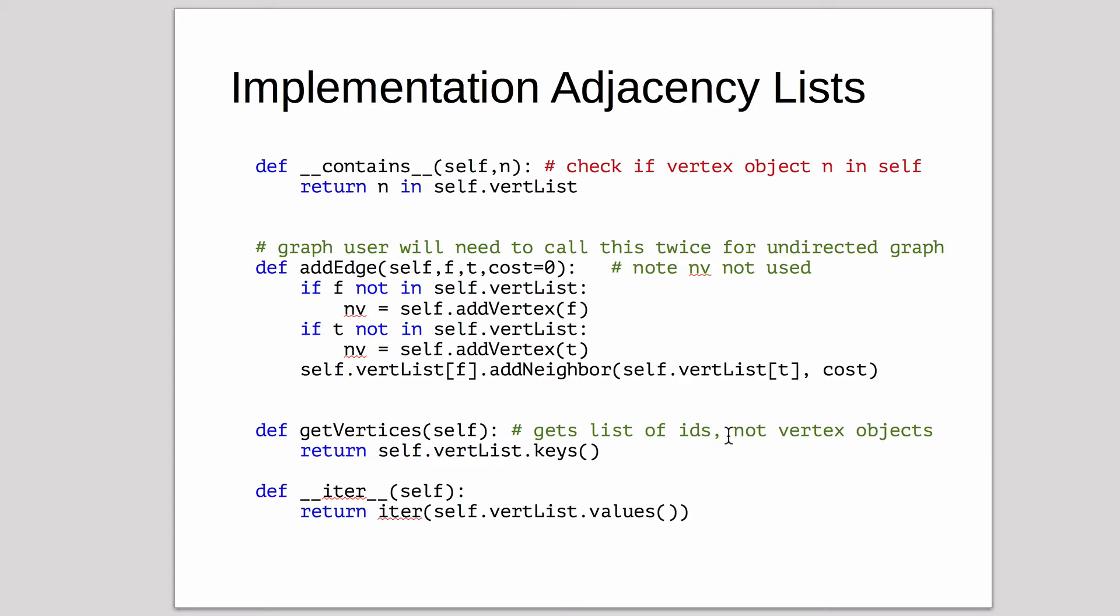GetVertexes returns a list of IDs, not vertex objects. And then we have an iterator. That's just going to call an iterator over the values of the vertex list. What are the values of the vertex list? Those are the vertexes themselves. So this returns a list of vertices.